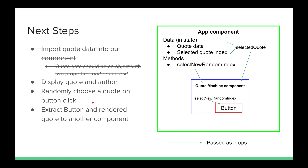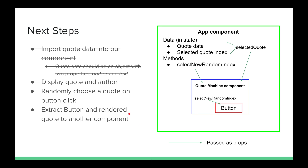So we click a button, a new quote is chosen, and I want to extract the button and also the rendered quote into its own component. I'm going to call this the QuoteMachine component, and we'll pass props such as the button's click handler and the actual selected quote.